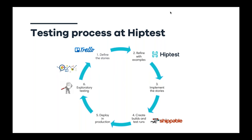Before starting implementation of a feature or user story, we have a Three Amigos session with the product owner, marketing, one developer, and one tester. We ensure a shared understanding of the feature — the business expectations and assumptions — and also the behavior. For that we use HipTest to capture the different BDD scenarios for this feature.